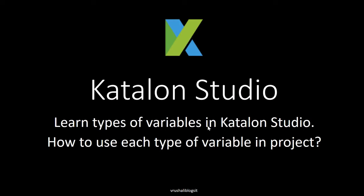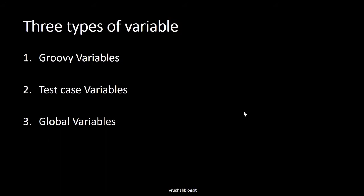In this tutorial we are going to learn about types of variables in Catlearn Studio and how to use each type of variable in your project. There are three types of variables in Catlearn Studio: Groovy variables, test case variables, and global variables. Let's look at them one by one.